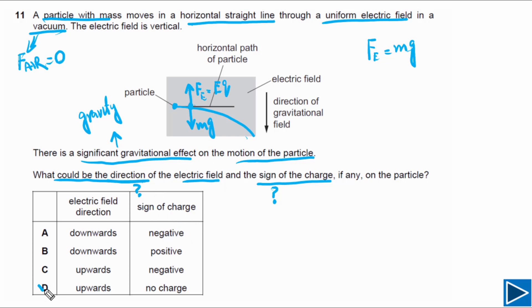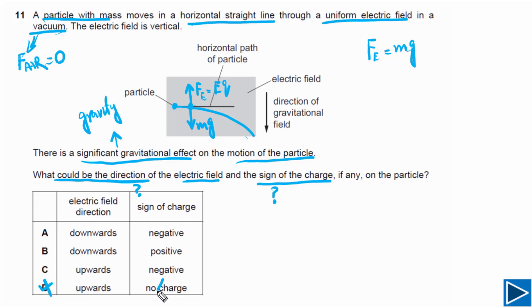Option D states there is no charge on the particle. If there is no charge, there is no electric force, so the particle would follow a parabolic path. This is not a possible option, so we can eliminate it and are left with three options.